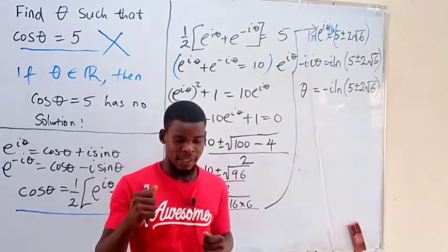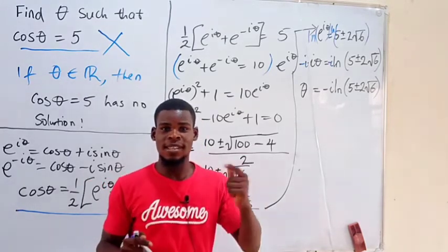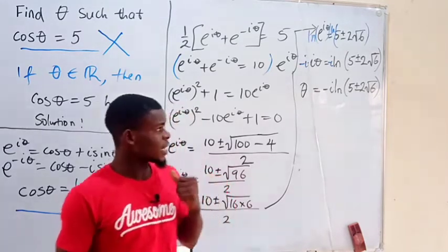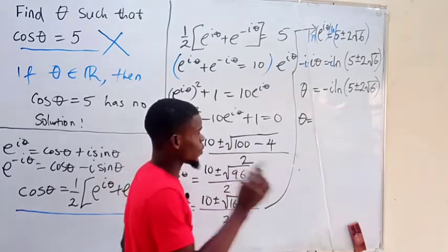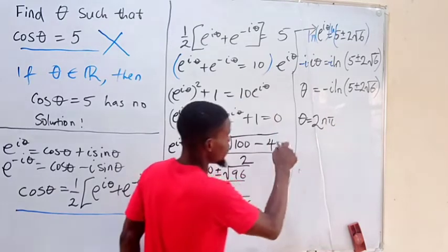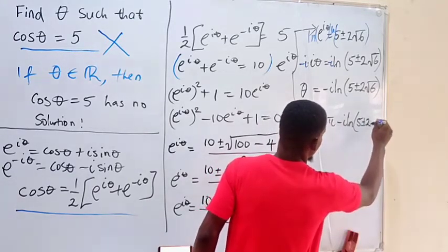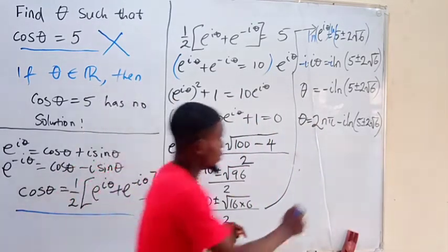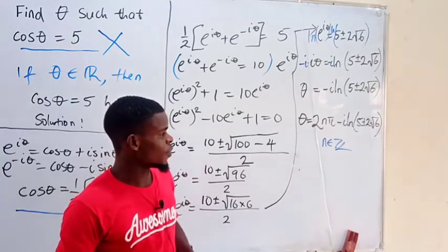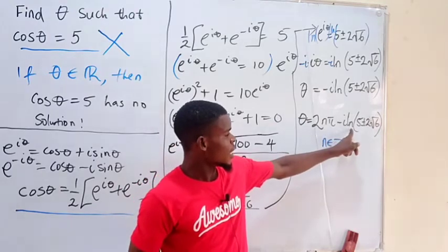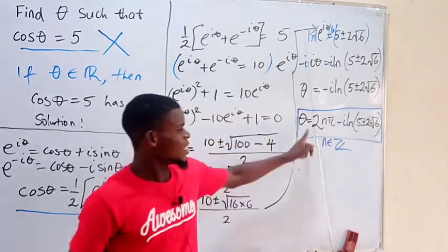Recall that cosine is a periodic function with period 2π. So if cosine of an angle gives a certain result, then cosine of that angle plus 2π gives the same result. Since that is the case, we can rewrite theta in its general form as 2nπ minus i times the natural log of 5 plus or minus 2 times the square root of 6, where n belongs to the set of integers — 0, ±1, ±2, ±3, and so on. So with this angle, we can have cosine equal to 5, and this angle is a complex number.